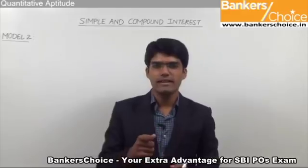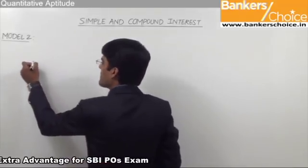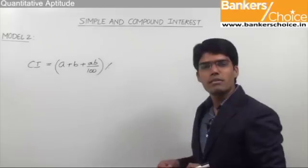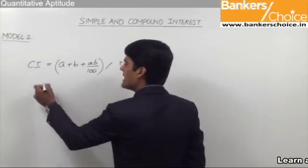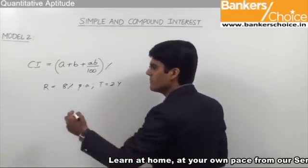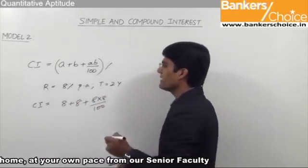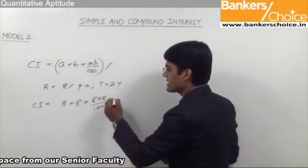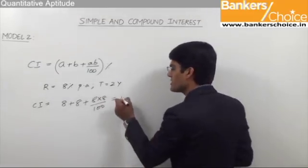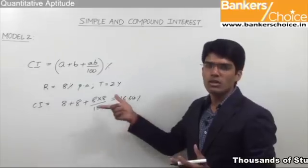Before taking more examples, let us quickly revise how to calculate compound interest using percentages. Compound interest can always be taken as a + b + ab/100 percent where a and b equal the rate of interest. For example, at 8% per annum for 2 years: 8 + 8 + (8 × 8)/100 = 16 + 0.64 = 16.64%. Based on the principal, we calculate 16.64% to get the required compound interest.